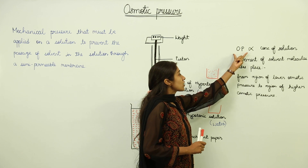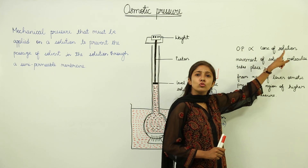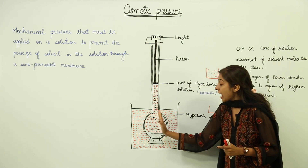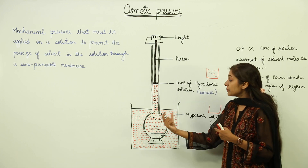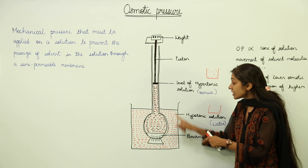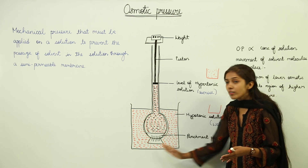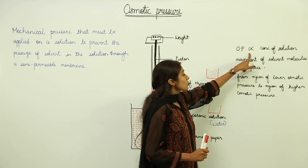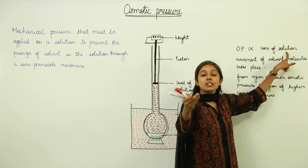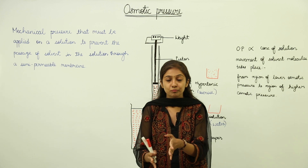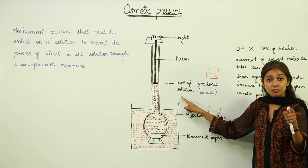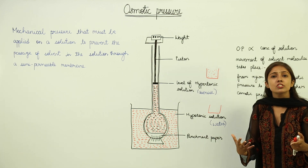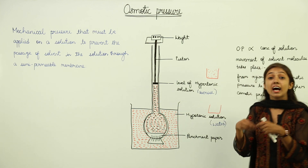Osmotic pressure is actually directly proportional to the concentration of the solution — means greater the solute particles, greater is going to be the osmotic pressure. Since the hypertonic solution contains more number of solute particles, the osmotic pressure is more in the thistle funnel. And in the beaker, we have simply taken pure water, so the osmotic pressure is going to be low. Just remember the common principle: osmotic pressure is directly proportional to the concentration of the solution — more concentrated the solution, more is going to be the osmotic pressure.